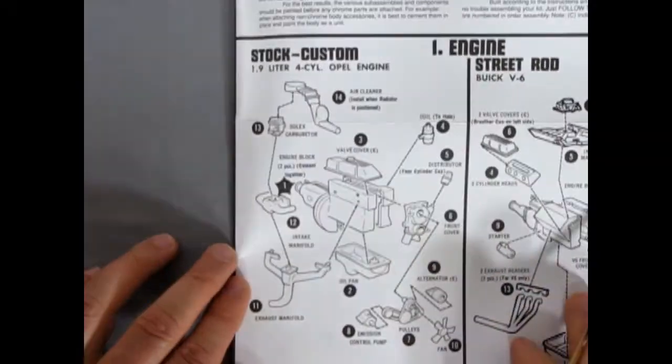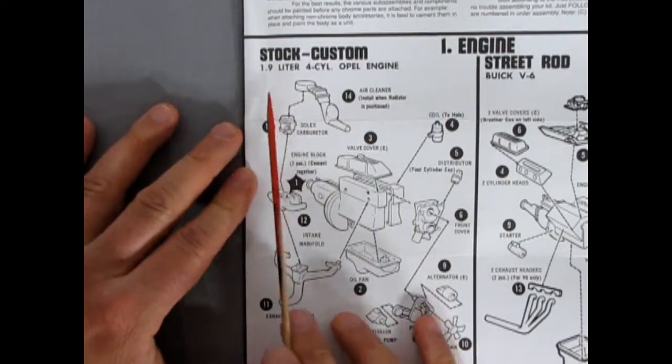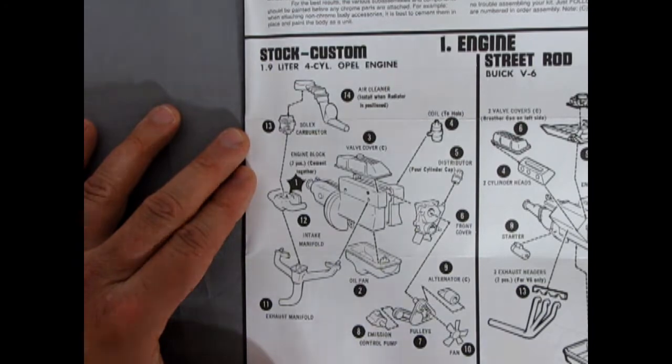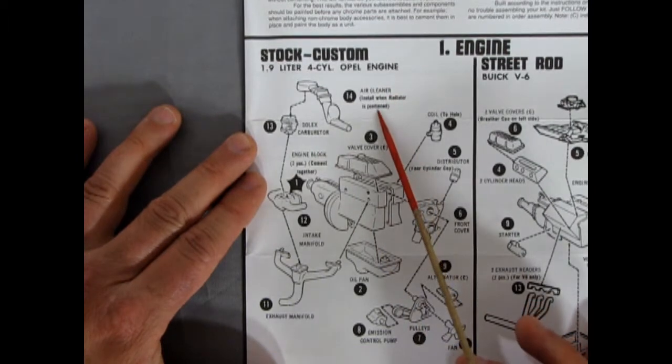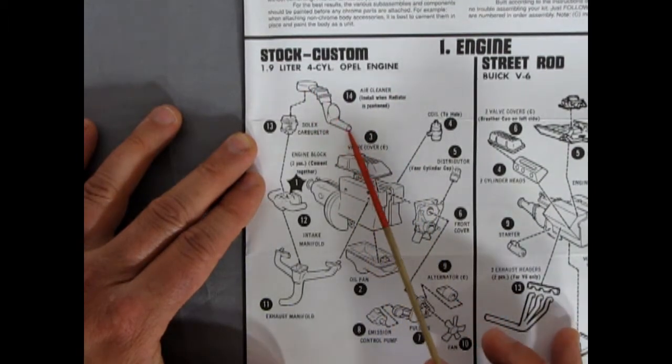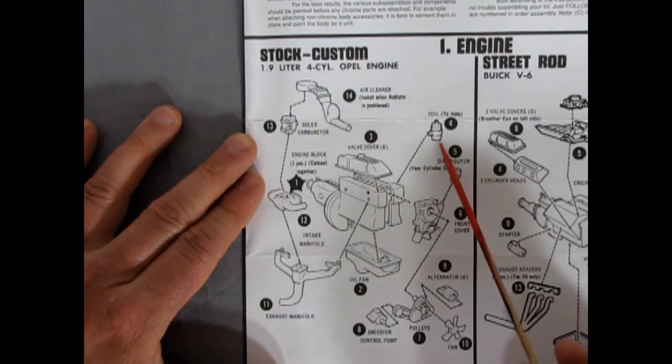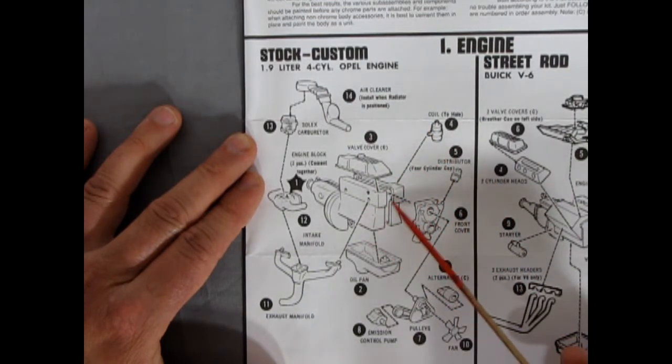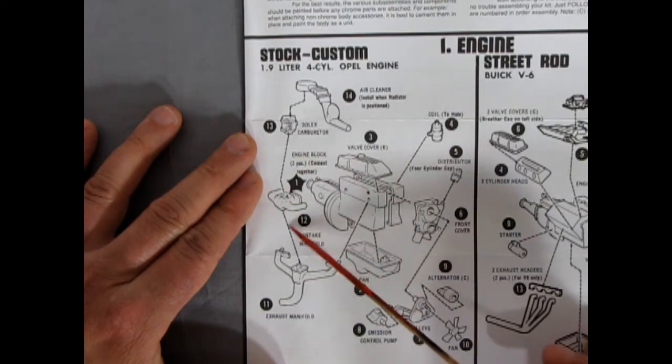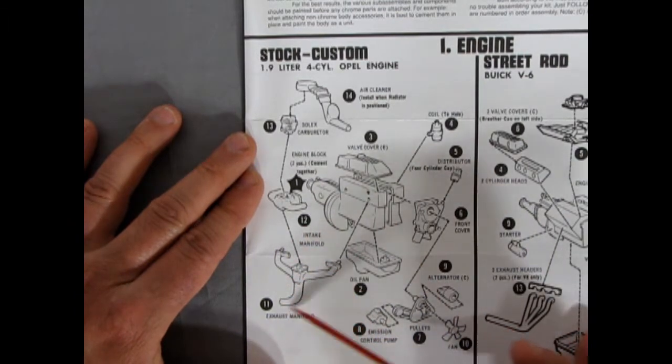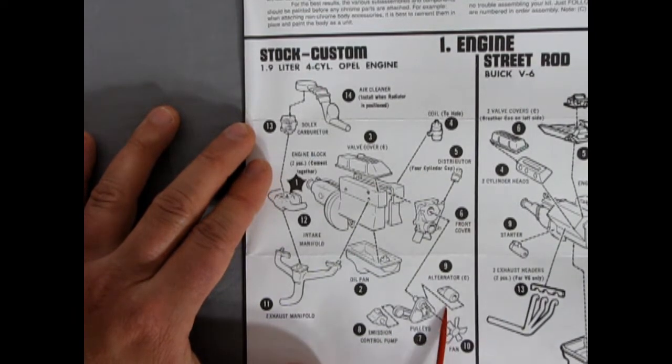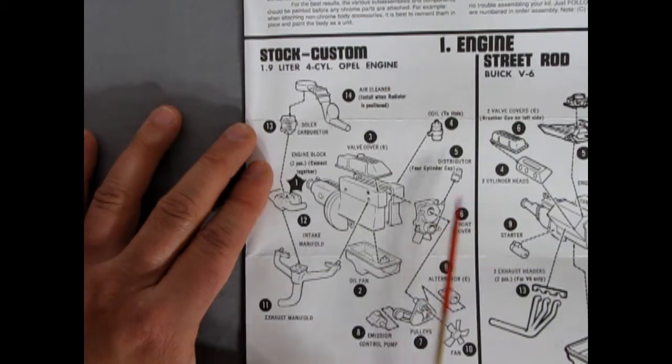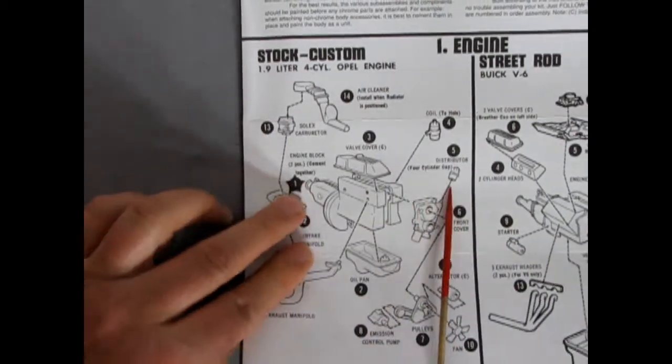And we can see our engines here. So to start off with we have the stock custom 1.9 liter four cylinder opal engine. And as you can see it's got a Solex carburetor. This really bizarre air cleaner. So the cleaner would be there. And then this comes down and goes somewhere in the front. We've got a coil here for our engine. Valve cover. The two halves of the engine block going together. The Solex carburetor of course is going to sit on this intake manifold. And the intake manifold sits on top of the exhaust manifold. Got this nice oil pan here. There's an emission control pump. Your pulleys, your fan, your alternator. The front cover for the engine. And of course the distributor. Four cylinder style cap.